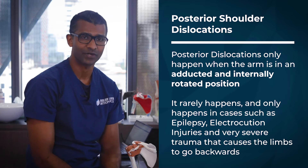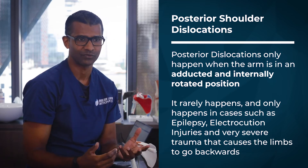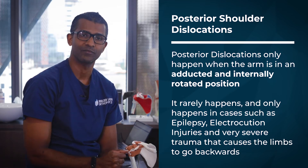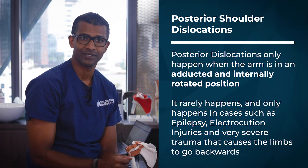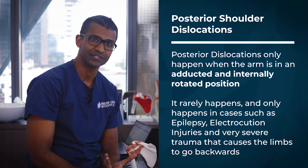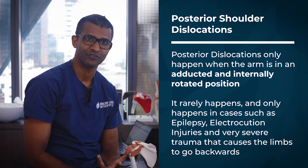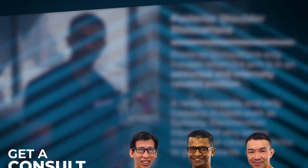Posterior dislocation is very rare and generally happens in one of few scenarios: number one, epilepsy; number two, electrocution injuries; and number three, very severe trauma forcing the limb backwards.